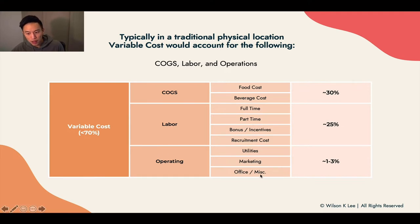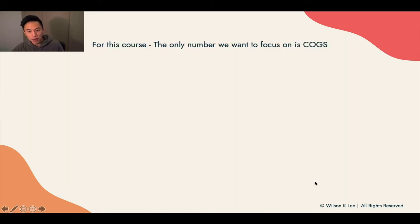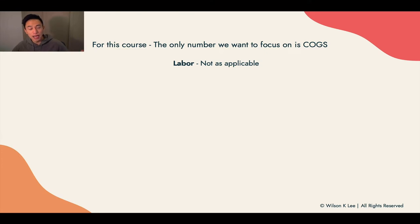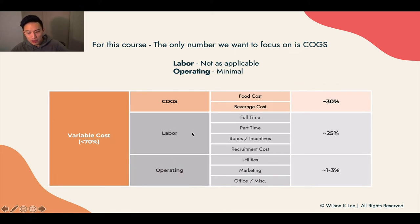Operating costs, utilities, your marketing, office, miscellaneous — and these are the percentages that they would account for from your revenue. For this course specifically, we're only focusing on cost of goods sold because labor is not going to be as applicable. You're not going to have people serving your guests or a front-of-house staff. Operating costs would be super minimal. For the sake of simplicity, that's the reason why we're going to take out those two items and really just focus on your cost of goods sold to figure out the expenses for your operations.